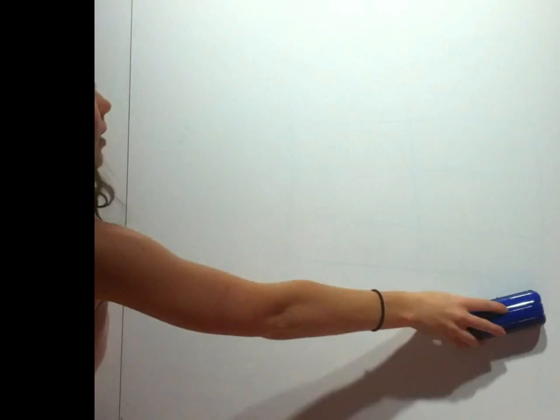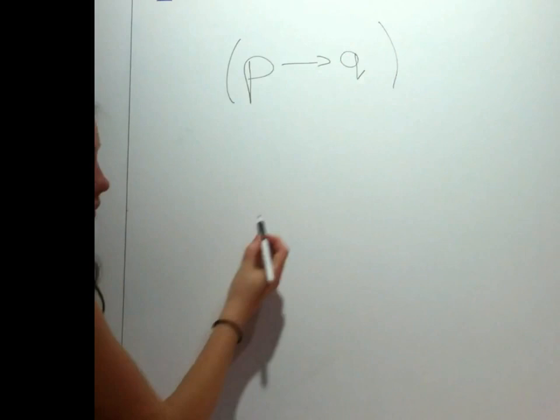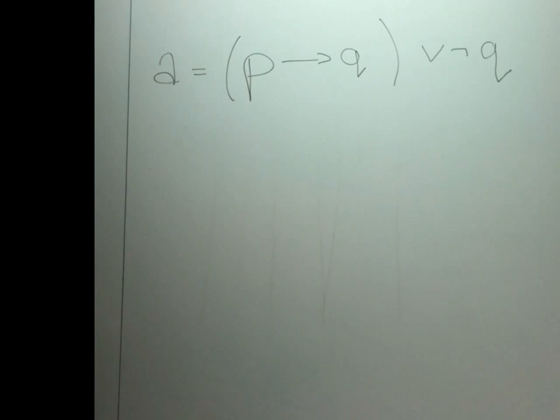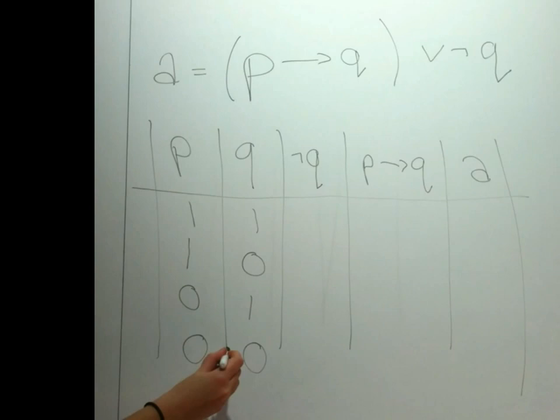Now, let's talk about tautologies. This is when the proposition is always going to be true. Suppose you have an example involving P's and Q's. Here we have P implies Q, or not Q. We let the whole statement equal A. Not Q is the same as the negation of Q, which is the opposite of Q, and can be written as such. In the column P, we have true, true, false, false. In the column Q, we have true, false, true, false.